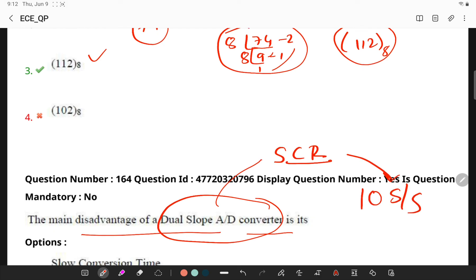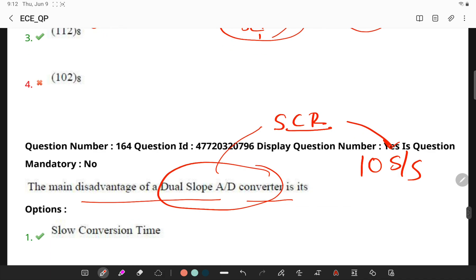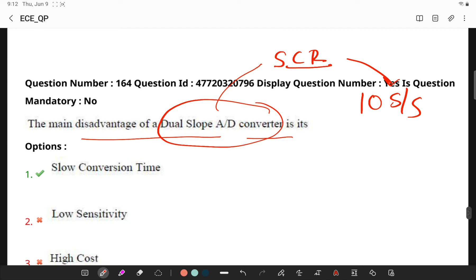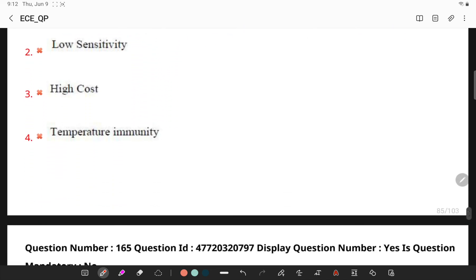and in applications where this is not a problem, you can use this such as in a temperature transducer. So, dual slope has the main disadvantage which is slow conversion rate.